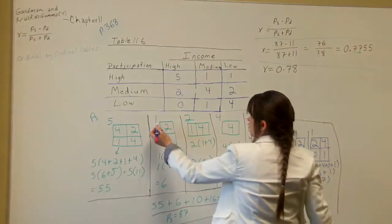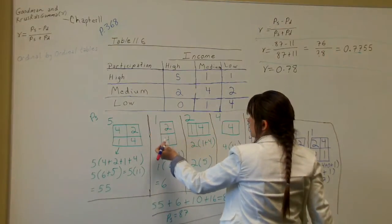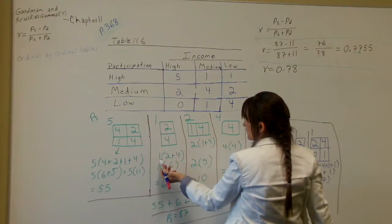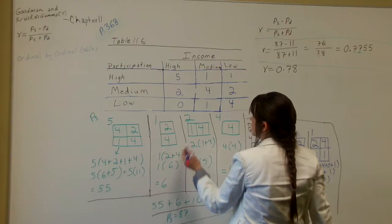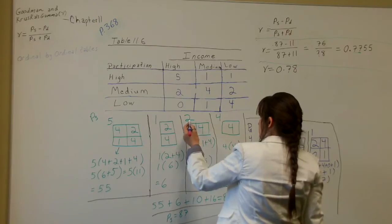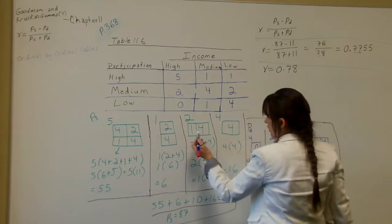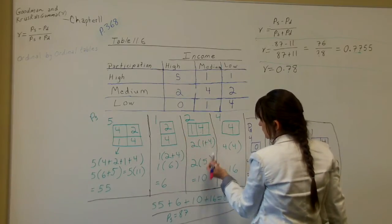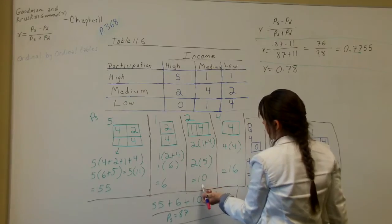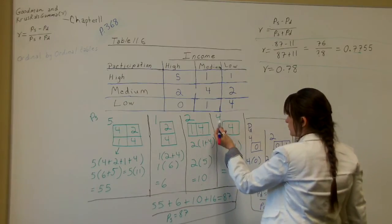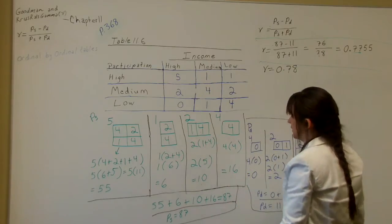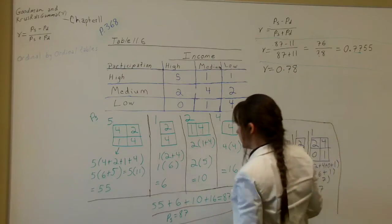And then for the next one, 1 times 2 plus 4. You're adding the ones that are in the boxes. So 2 plus 4 equals 6. 1 times 6 equals 6. The next one, 2 times 1 plus 4. 1 plus 4 equals 5. 2 times 5 equals 10. And then this one, there's only one 4. So it's 4 times 4 equals 16.